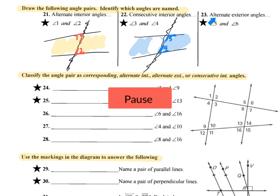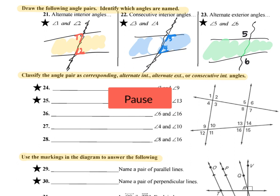The next question asks us to draw alternate exterior angles. We draw our two lines and cut them with the transversal. The angles have to be exterior — I'll shade the interior to show where my angles will not be. Alternate means one has to be on the left and one on the right. So if I put angle five up here on the left outside, I put angle six on the right-hand side outside. That's alternate exterior.